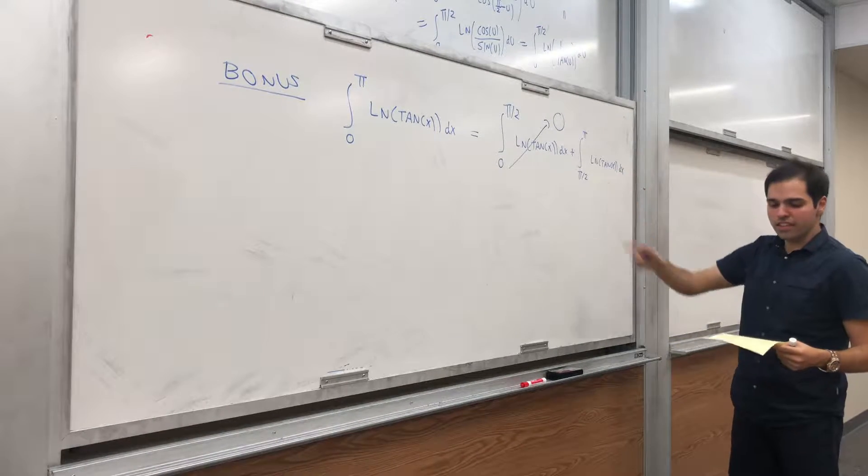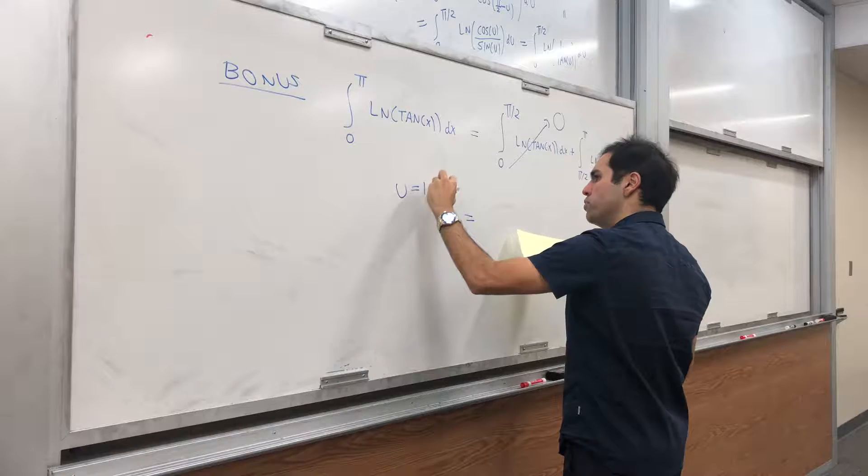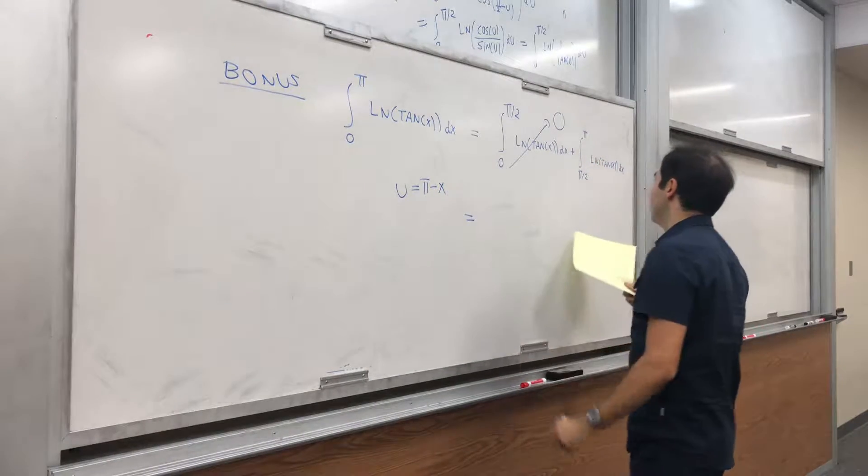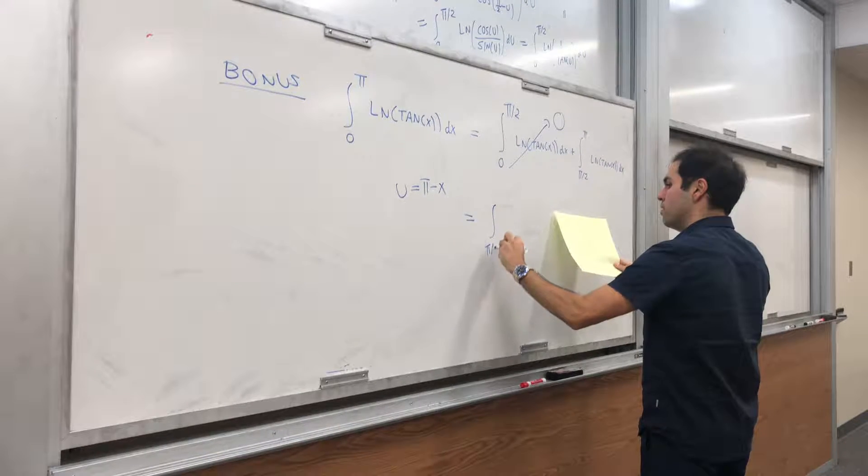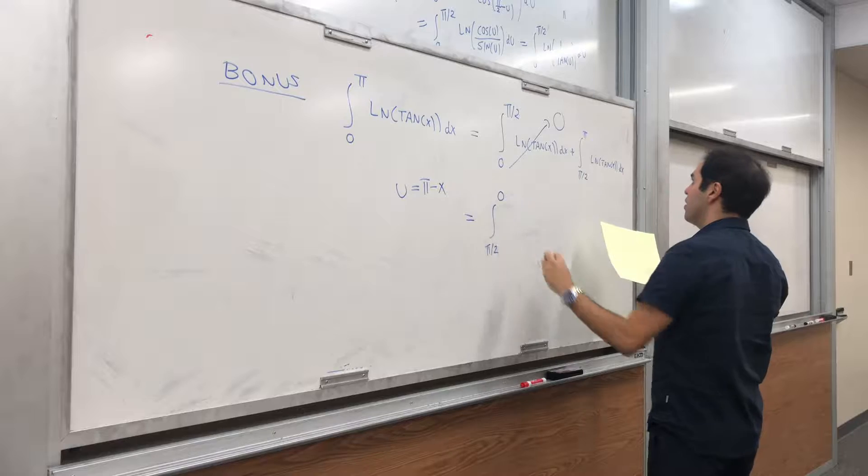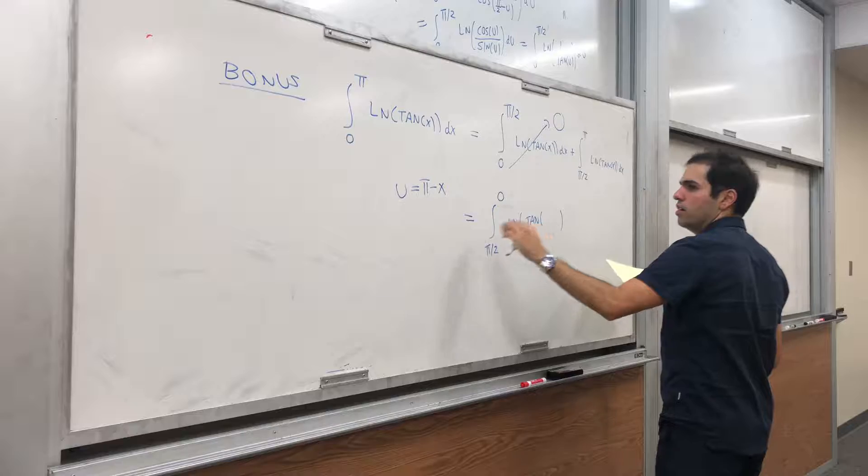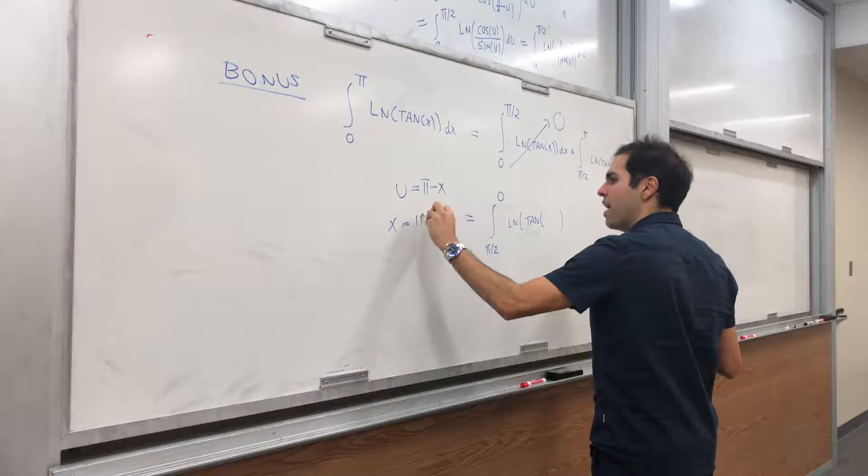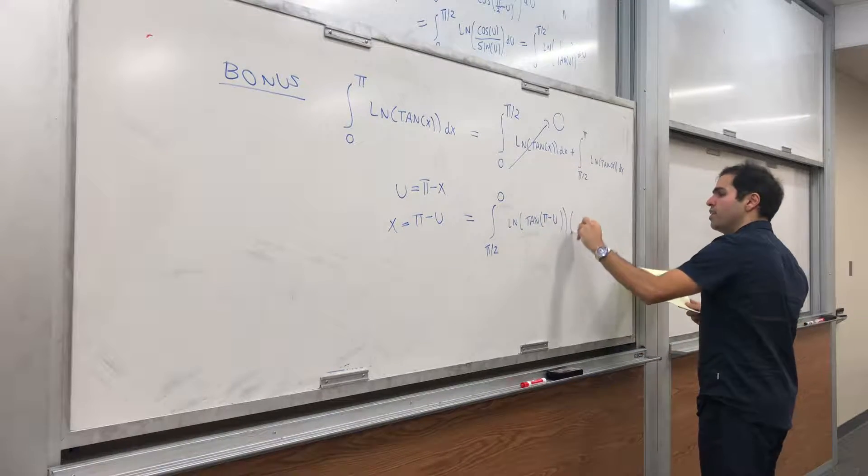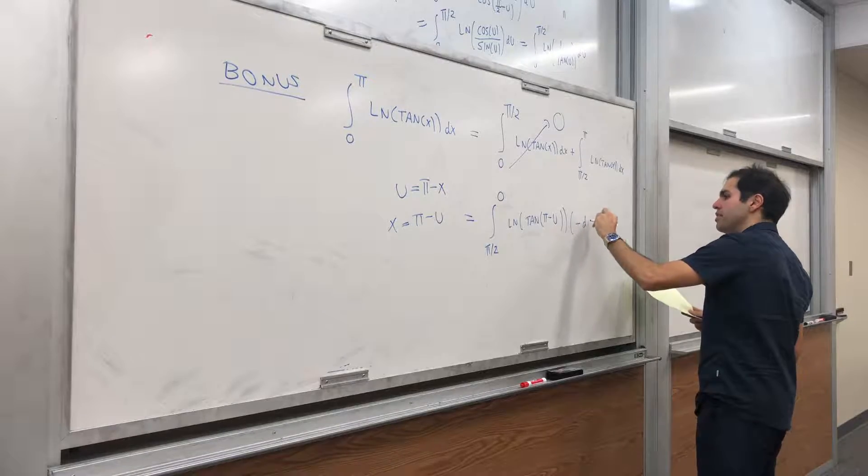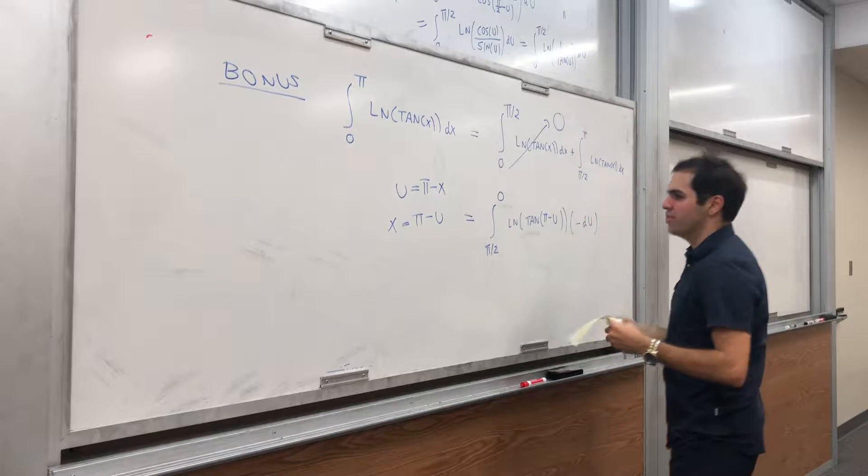And for this one, let's just readjust it, and let's use u substitution again. And in this case, let's use u equals to π minus x. Then u of π over 2, it's still π over 2. U of π is 0. And then we get ln of tangent of, if u is π minus x, then x is π minus u, so π minus u. And we have dx is minus du. And again, it's in the wrong order, so let's readjust this.